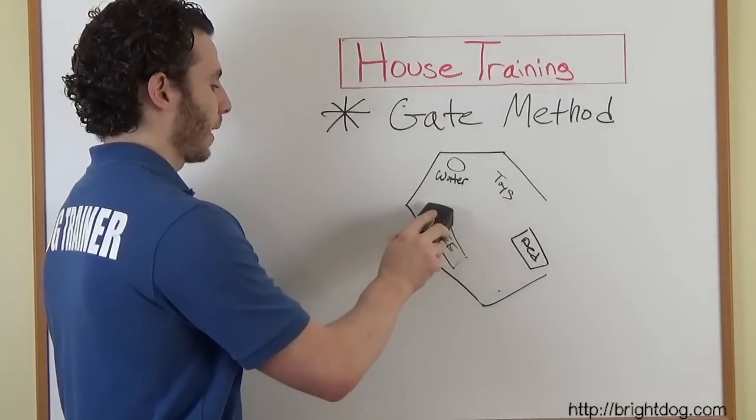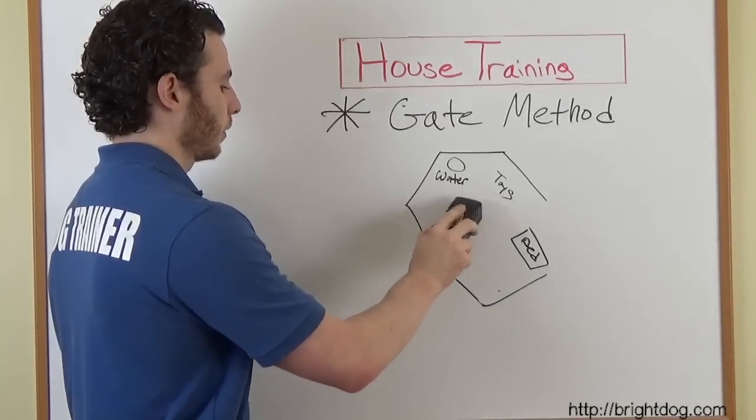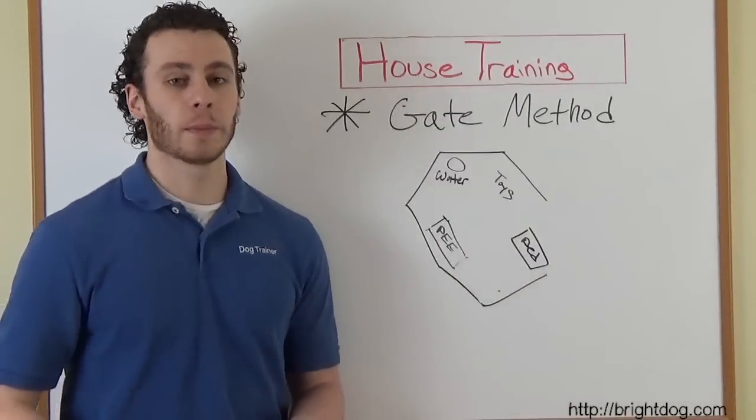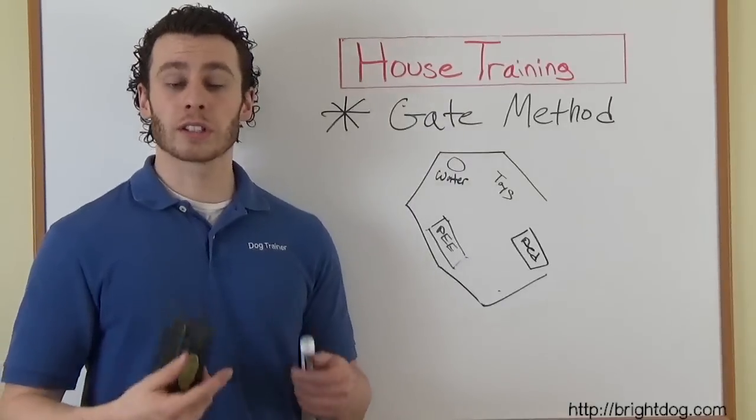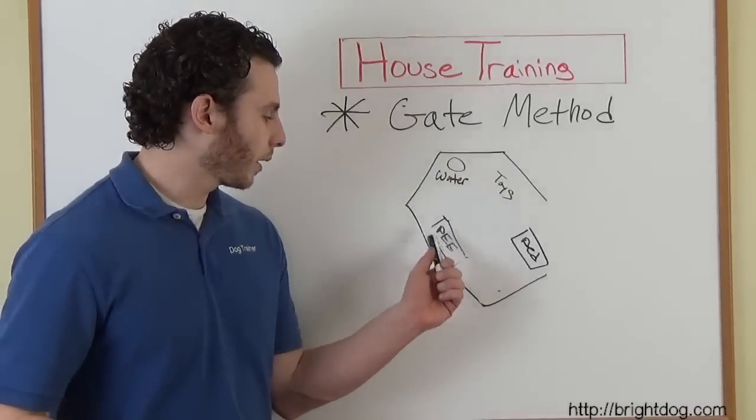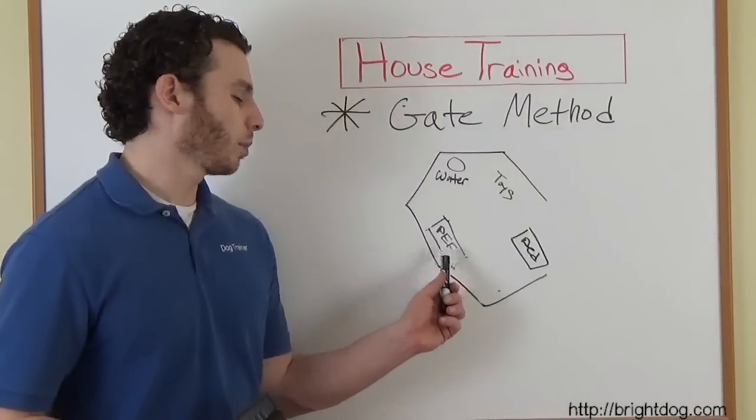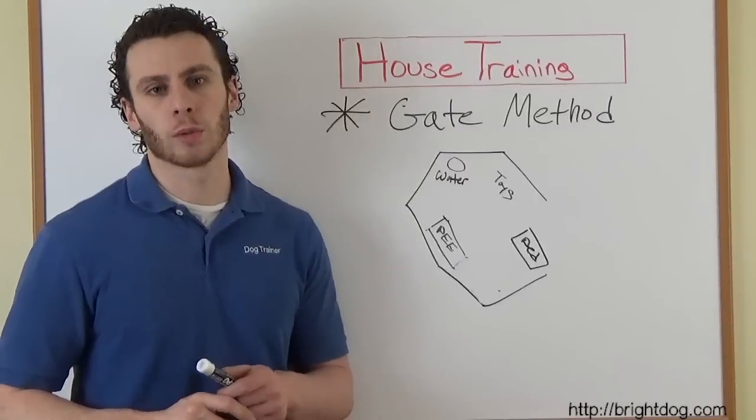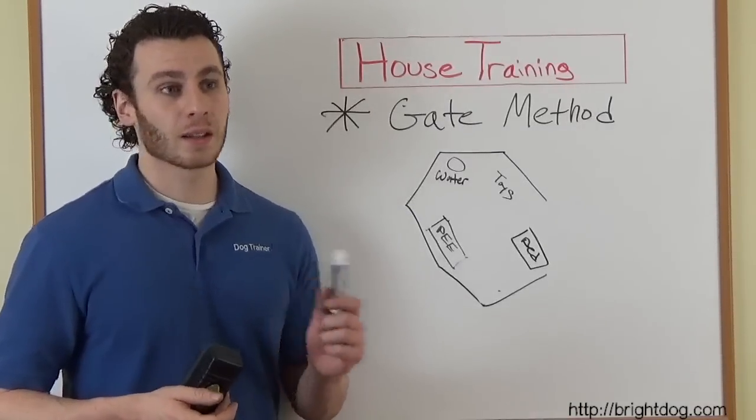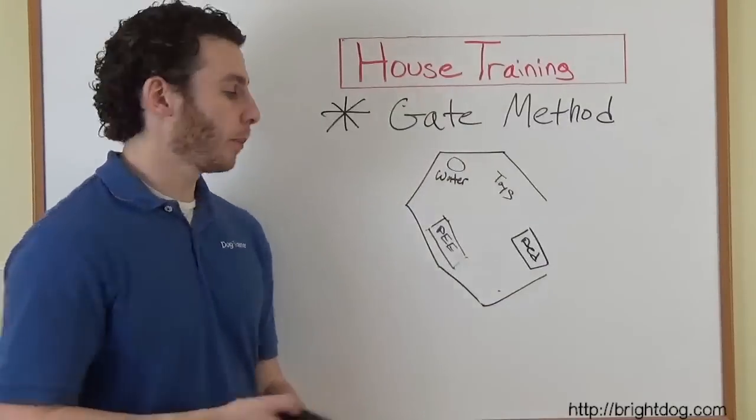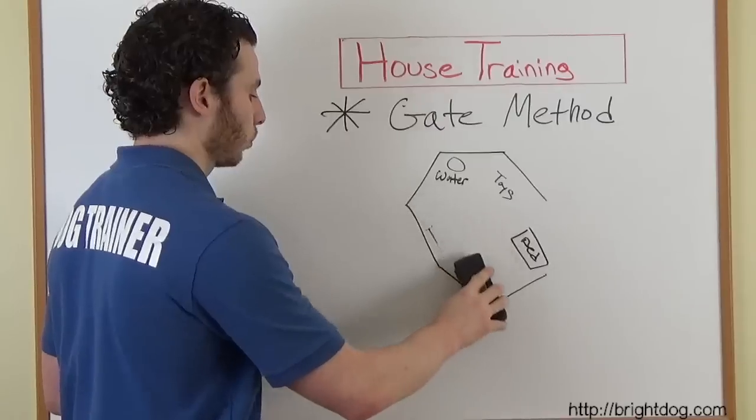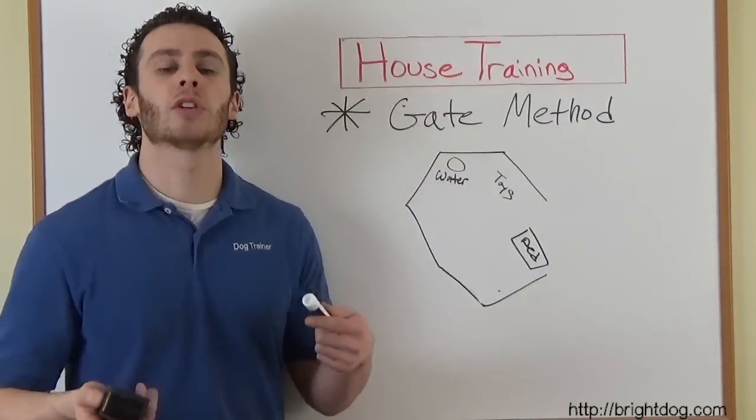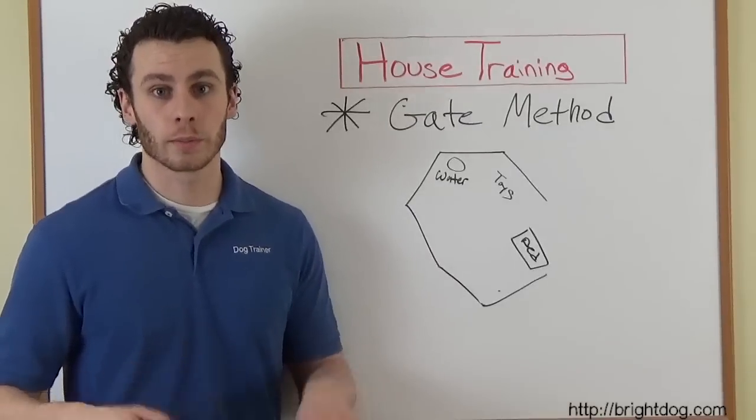Now, the timing to get rid of that last pee pad is going to vary. It varies on how well you've been doing with house training, how consistently your dog goes outside, how much you take him out. Generally, I see around three to four months is the time that we're at one pee pad. By six months, you can probably start testing out taking it out altogether. And now that it's out altogether, the only other place that your dog knows to go to the bathroom is outside. So he holds it.